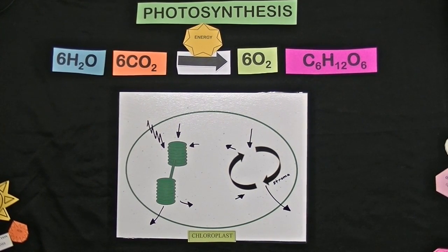All right, you've all seen the equation for photosynthesis. We know that plants need water, carbon dioxide, and sunlight in order to make the food that they need to survive.